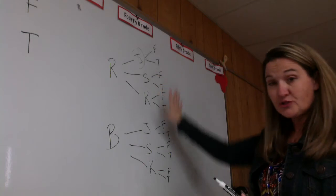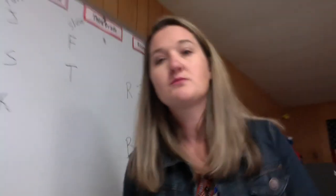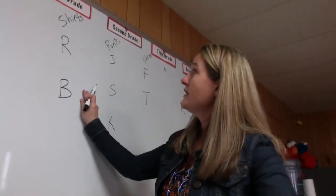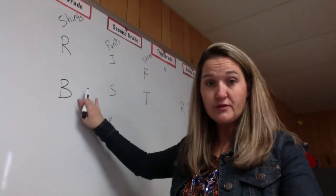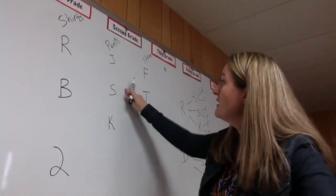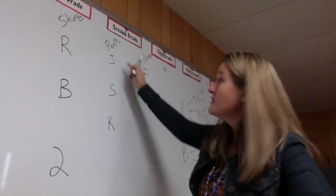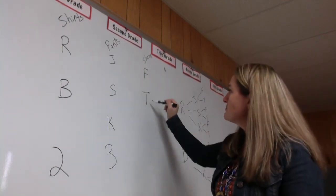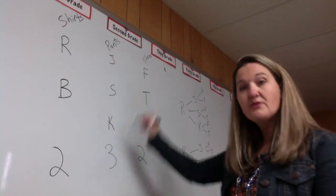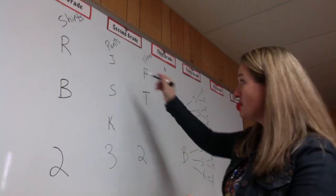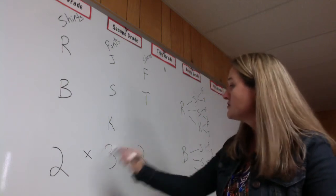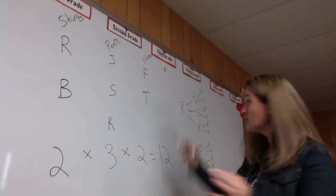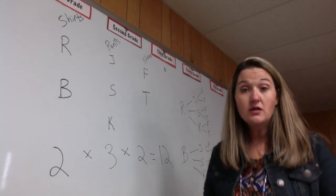So that's the tree diagram method. Now let's do the counting principle. Shirts: red and blue — two options. Pants: jeans, shorts, and khakis — three options. Shoes: flip flops or tennis shoes — two options. List the number of options for each category and multiply across. Two times three is six, and six times two is 12 — the correct number of outcomes. Good luck on your worksheet.